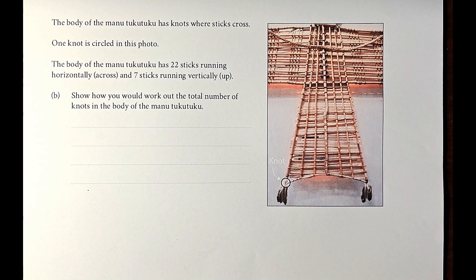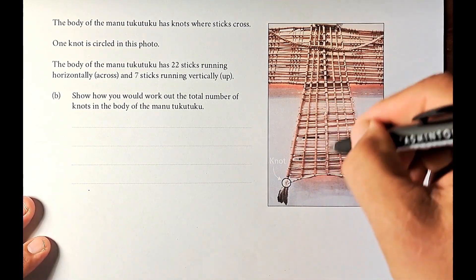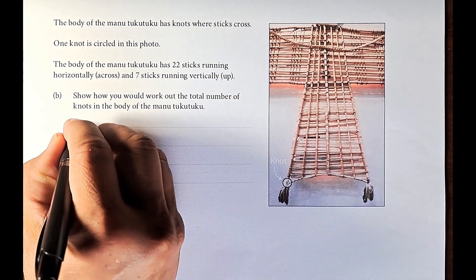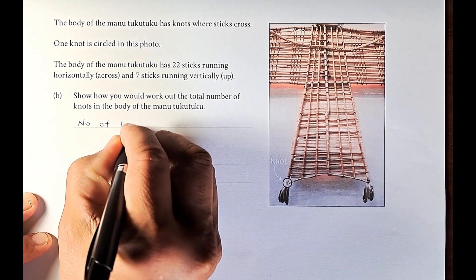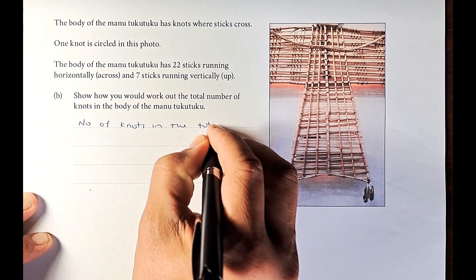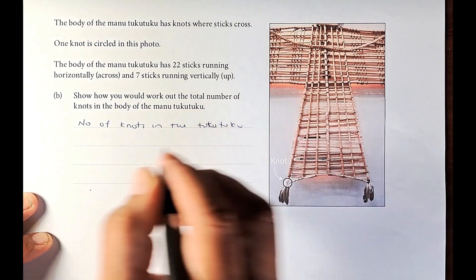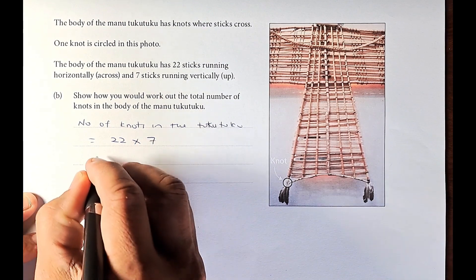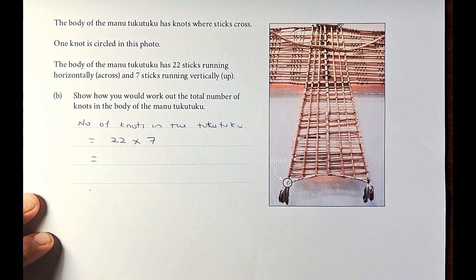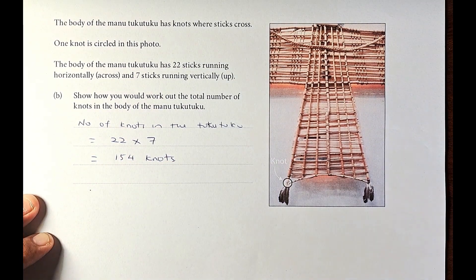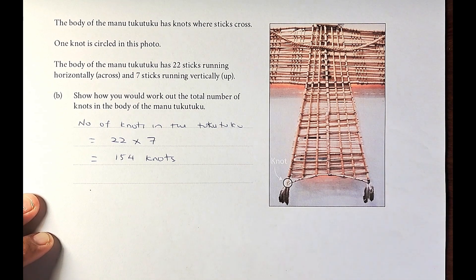How will you work out the total number of knots in the body of the Manu Tuku Tuku? If there are 7 verticals and 22 horizontals, the number of knots in the Tuku Tuku is just going to be 22 horizontally multiplied by 7. Put it in your calculator and the answer is 154 knots.